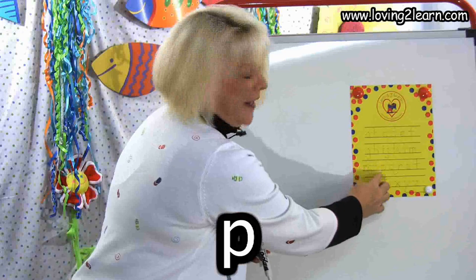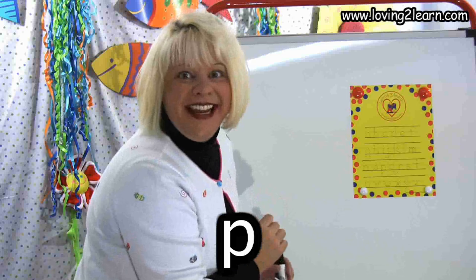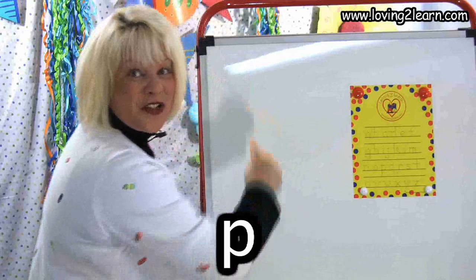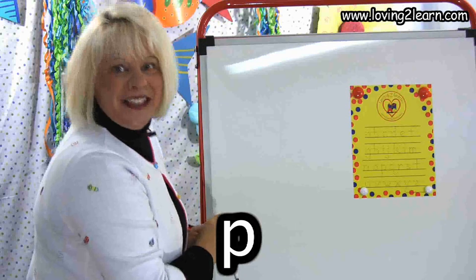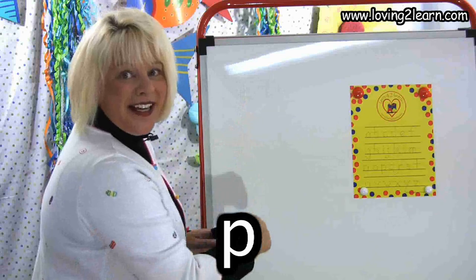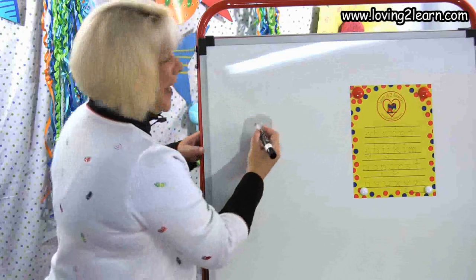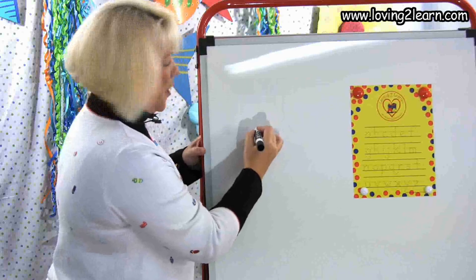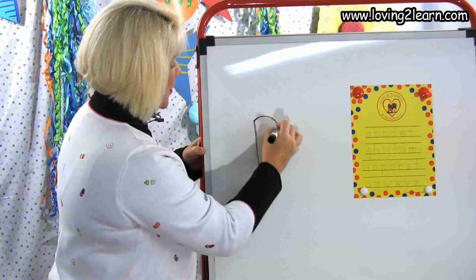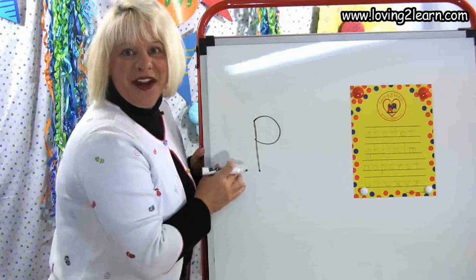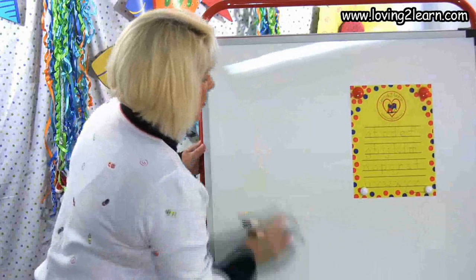The next letter is the letter P. P, we do straight line down and circle around the top. Let's do it in the air: straight line down, circle around the top. Let's do it on the wipe-off board: straight line down and circle around the top. There's the letter P.